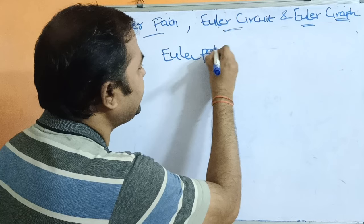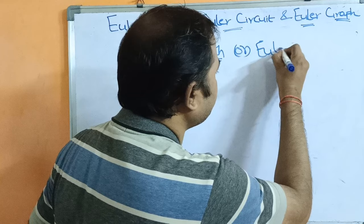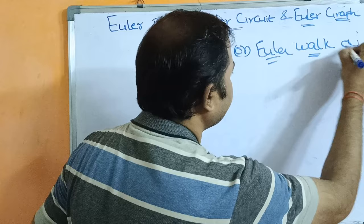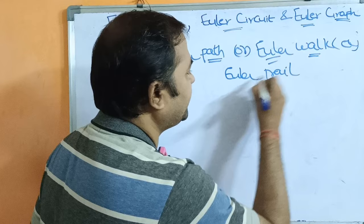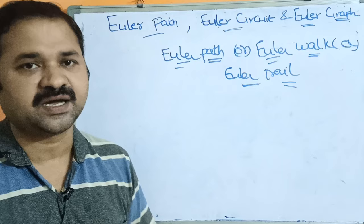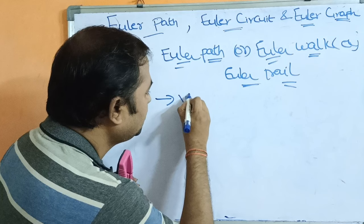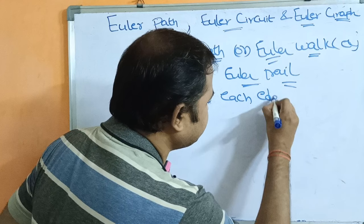Euler path can also be called as Euler walk, or it can also be called as Euler trail. So, Euler path, Euler walk, or Euler trail — let us see what Euler path means. Euler path means we have to visit each edge of the graph exactly once.